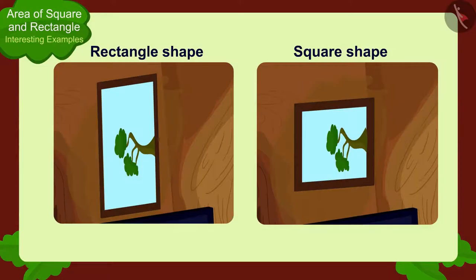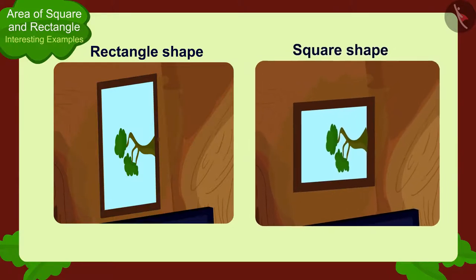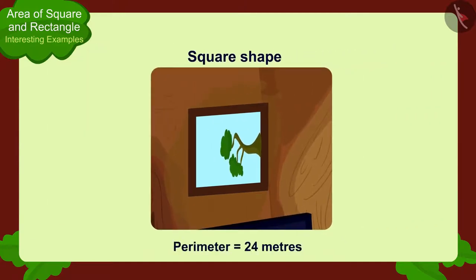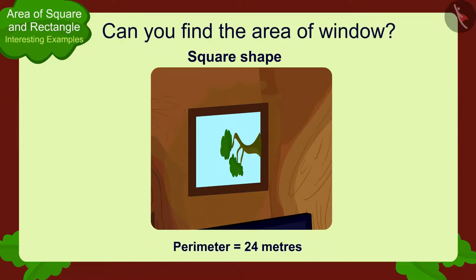And children, if Chanda's window would have been square instead of a rectangle and if its perimeter would be 24 meters, then can you find the area of Chanda's window? If you want, you can find a solution by stopping the video.